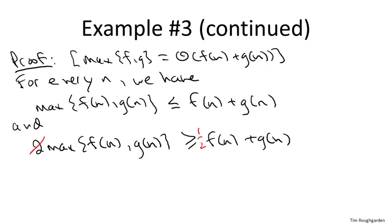Now it's going to be convenient, it's going to be more obvious what's going on if I divide both of these sides by two. So that the maximum of f of n and g of n is at least half of f of n plus g of n. That is, it's at least half of the average.